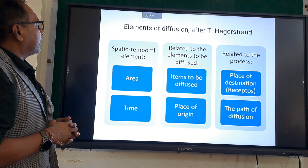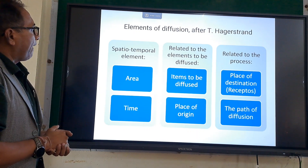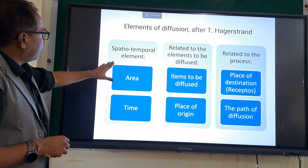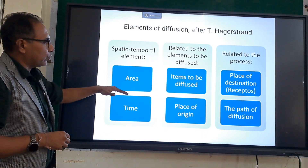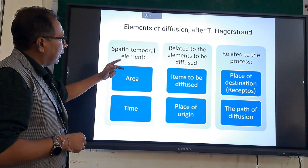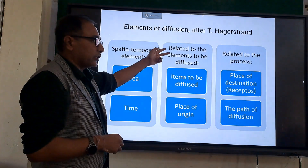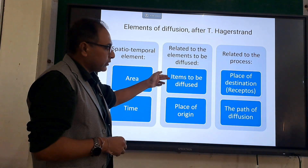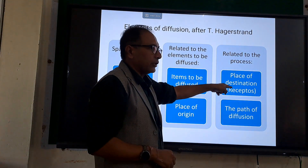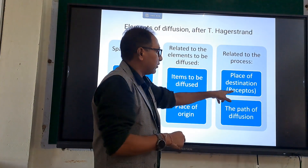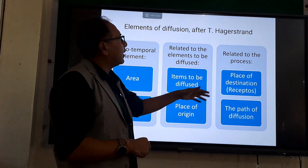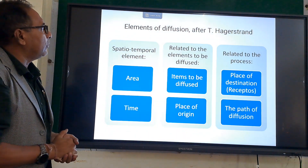These are the certain elements identified by Hagerstrand in terms of understanding the mechanism of diffusion. There are three sets of elements. First, spatiotemporal elements — area and time — the two dimensions where diffusion takes place. Second, elements related to what is to be diffused, and the place of origin. Third, elements related to the process: the place of destination (the receptor), and the path of diffusion — the wave or direction through which the diffusion is taking place.